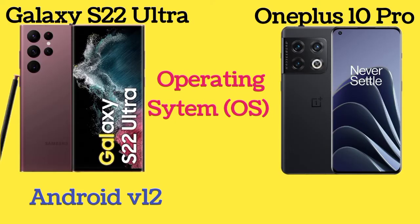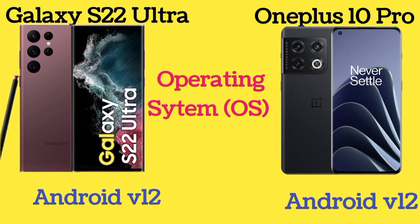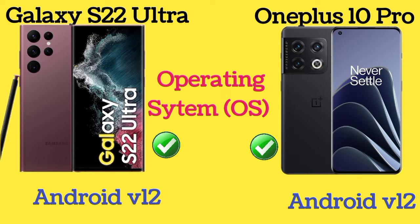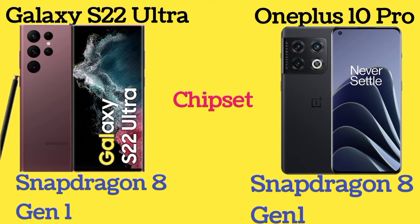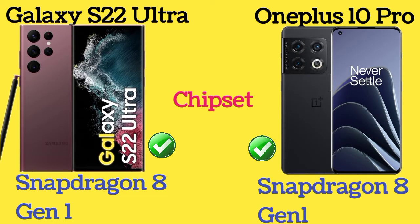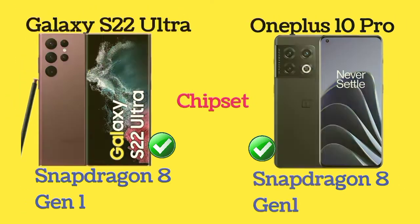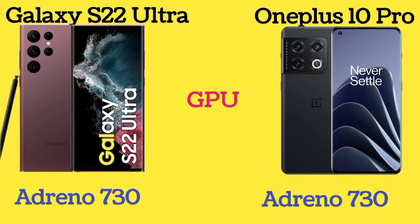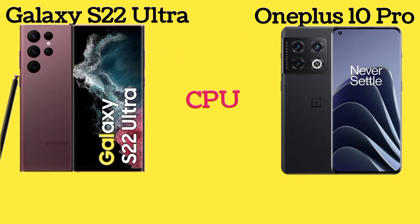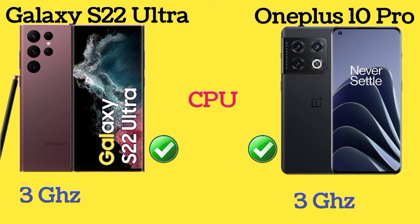The OS of both Galaxy S22 Ultra and OnePlus 10 Pro is Android version 12. Both phones have the same Snapdragon 8 Gen 1 chipset. The GPU of Galaxy S22 Ultra and OnePlus 10 Pro is Adreno 730, and both share the same CPU.